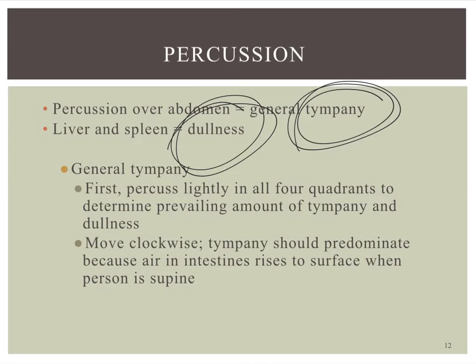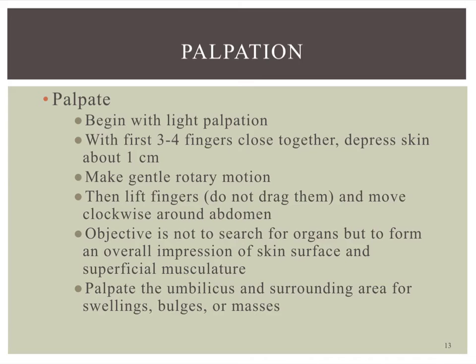Then move to palpation, starting with light palpation — same as we used in thorax. Just a couple of fingers held close together, pushing down about a centimeter in a gentle circular motion, starting in the right lower quadrant and moving around. With light palpation, we're not looking for organs or masses — just getting an overall impression of the skin and musculature of the abdomen. I watch the patient for any pain, facial grimacing, or if the abdomen tightens because it's painful. You can also lightly palpate the umbilicus, looking for any bulges or masses.